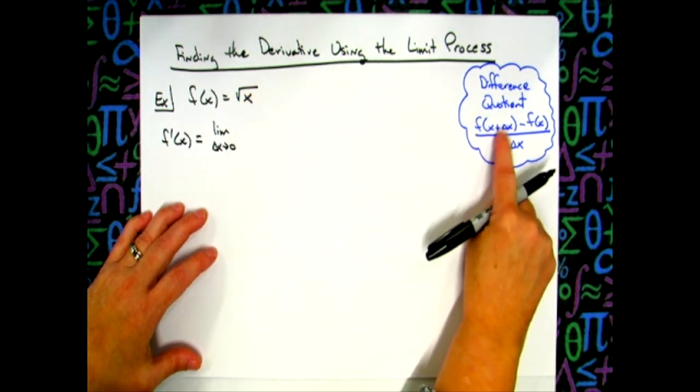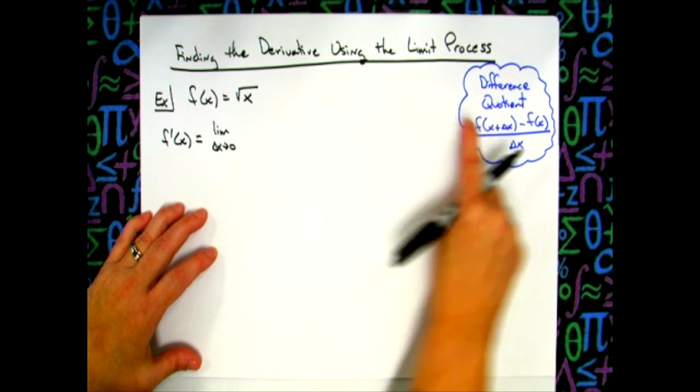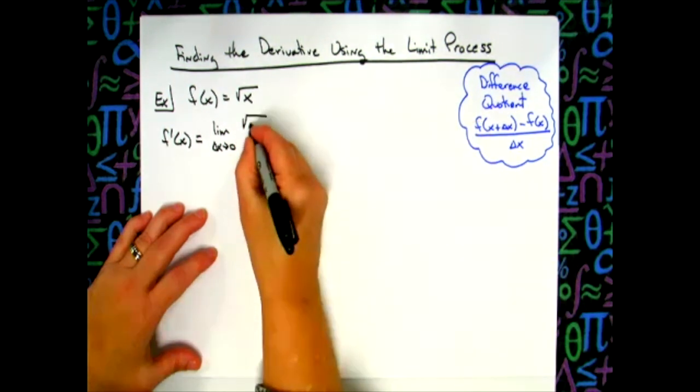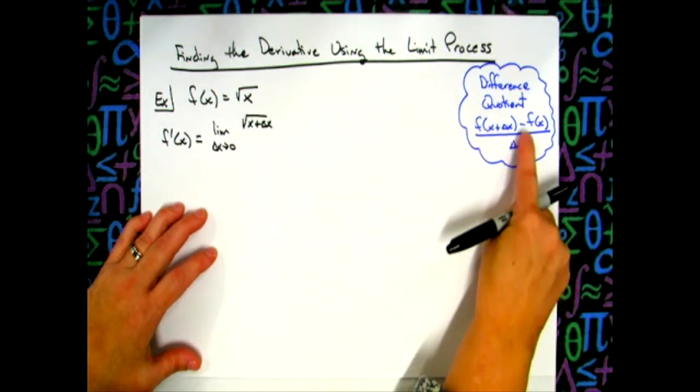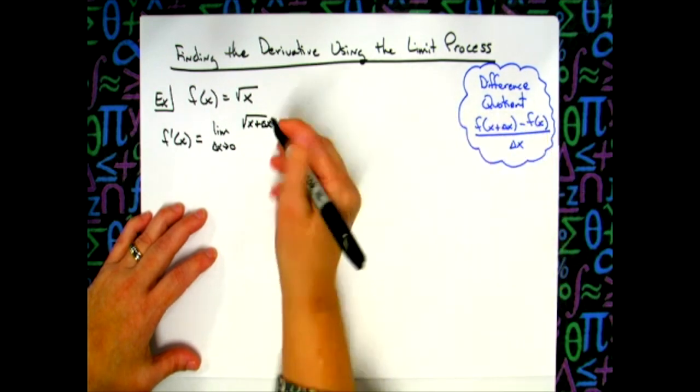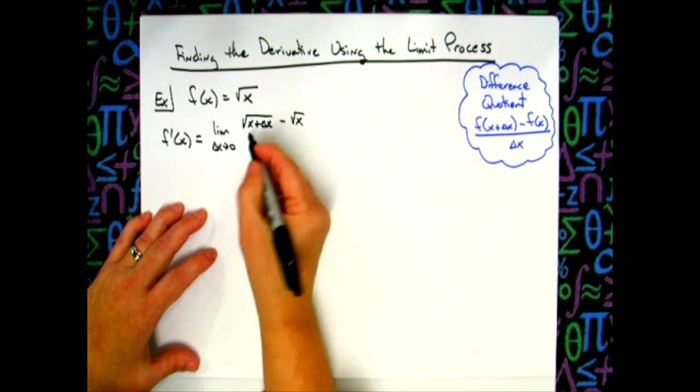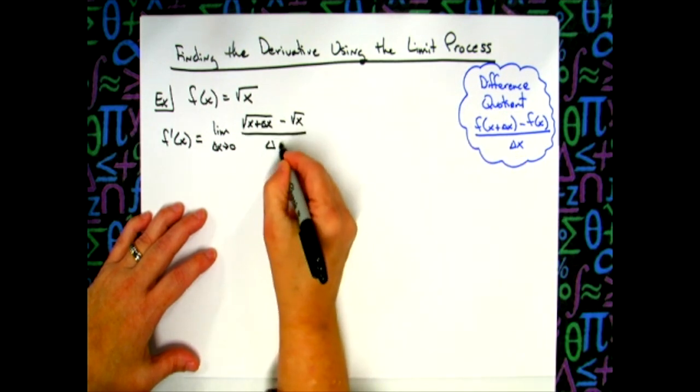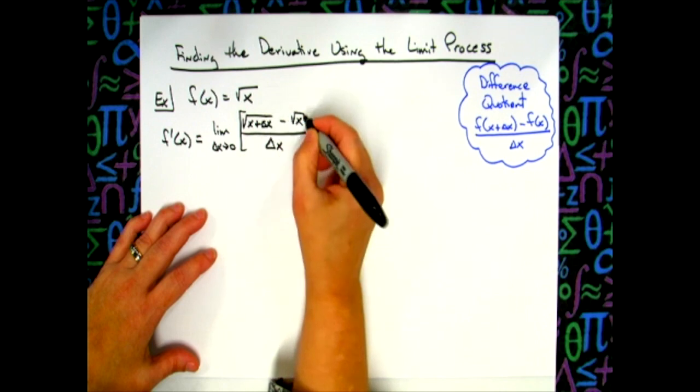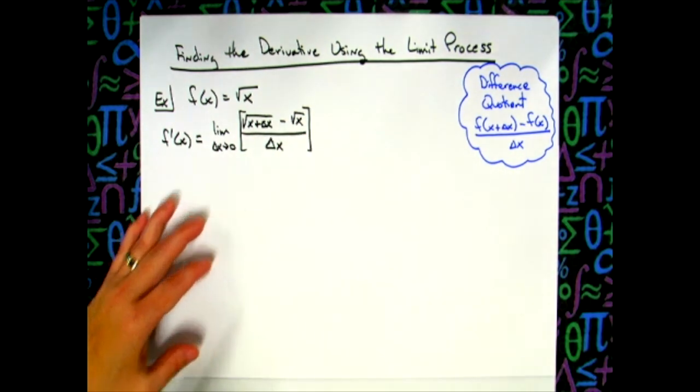In other words, I'm going to take x plus delta x and plug it into the function. So I will have the square root of x plus delta x minus the function itself, which is minus the square root of x, and then all of that over delta x.